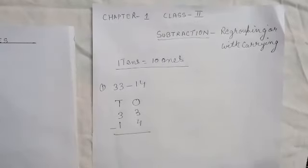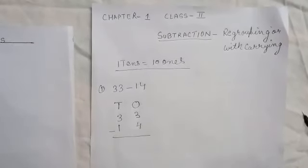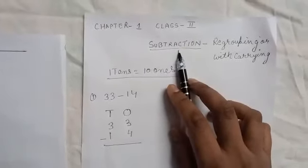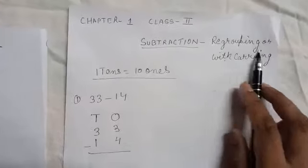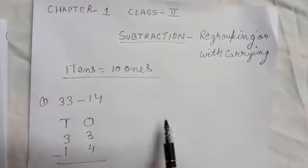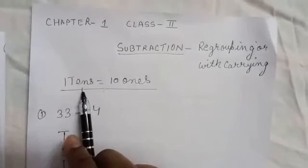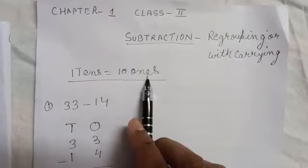Good morning children. In the previous video of Class 2 Maths, I explained subtraction without carrying. In this video, I will explain subtraction of 2-digit numbers with carrying. Before starting, we need to know that 1 ten is equal to 10 ones.